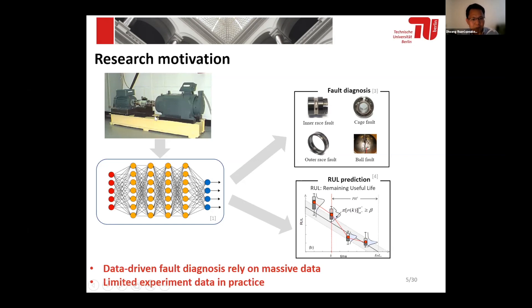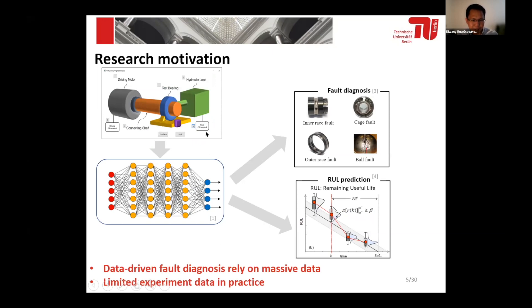However, in practice we only have very limited experimental data. For example, if we train or use the network for fault diagnosis, the main idea is to get enough data from a bearing test bench and then train our network. After training, the network can be used for fault diagnosis and remaining useful lifetime prediction. So our idea is maybe we can provide a virtual bearing test bench and then use the simulation data to train a new network for fault diagnosis. After training, we can use the network to achieve fault diagnosis in a practical setup. That is our motivation.